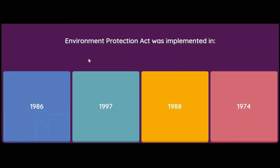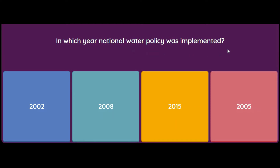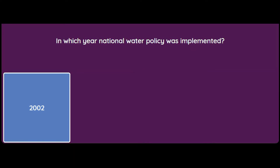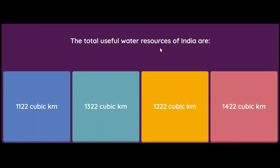The Environment Protection Act was implemented in 1986. In which year was the National Water Policy implemented — 2002, 2008, 2015, or 2005? The answer is 2002. The National Water Policy 2002 stipulates water allocation priorities in the following order: drinking water, irrigation, hydropower, navigation, industrial and other uses.